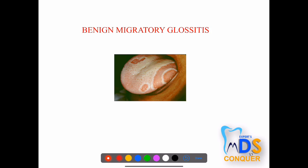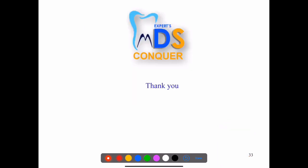Benign migratory glossitis, also called erythema migrans or geographic tongue, shows a serpiginous border over the tongue with erythematous depapillated areas, appearing as a reddish lesion. In summary, the main classification of red lesions includes reactive, inflammatory, pre-malignant, immune-mediated (such as erosive lichen planus and pemphigus), metabolic, vascular, infectious, and others. Having a clear idea of this classification is the key takeaway.